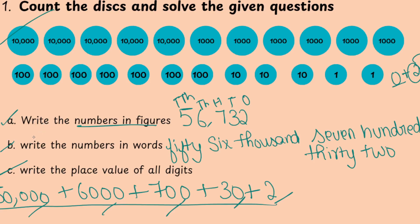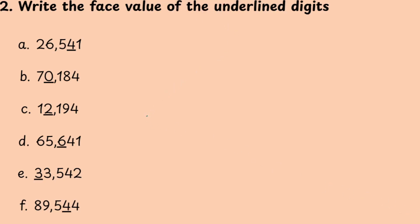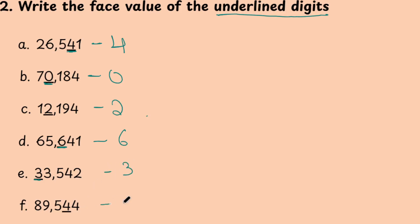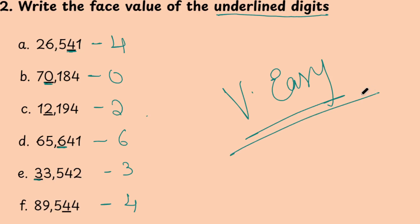Done. We are done with all 3 questions. Next: write the face value of the underlined digits. Face value of 4 is 4. As I said in the previous section, the digit itself is the answer for face value. For 0 the answer is 0, for 2 it is 2, for underlined 6 it is 6, for 3 it is 3, for 4 it is 4, for 5 it is 5. Face value is very easy.